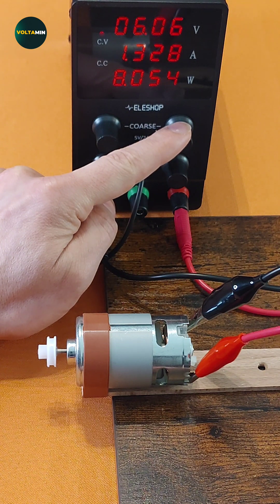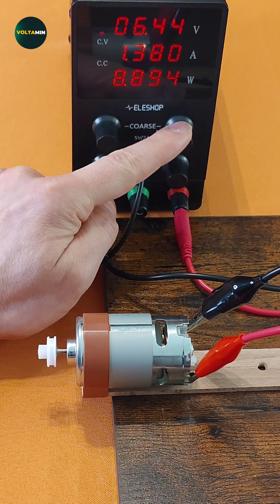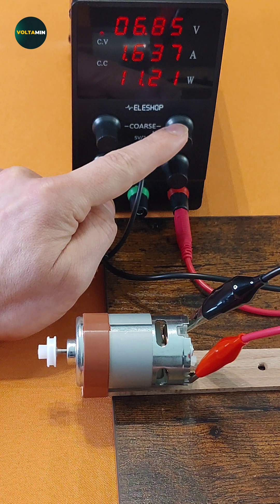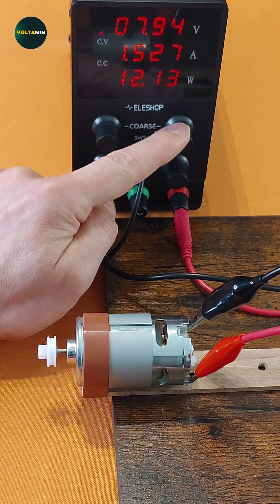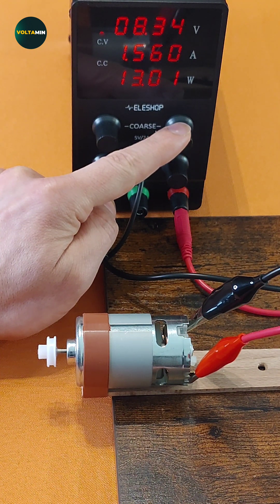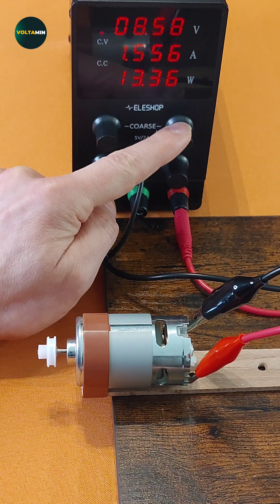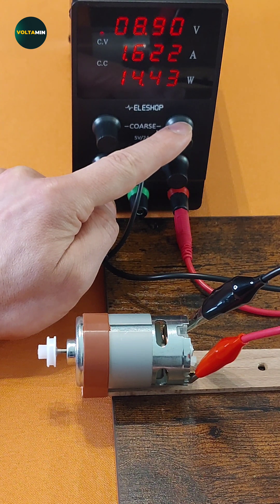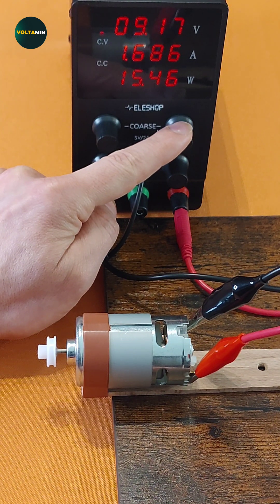Regarding current, as we increase the voltage, the motor's speed increases, leading to a higher back electromotive force, back EMF. The back EMF opposes the applied voltage, and to maintain the increased speed, the motor draws more current. This results in higher power consumption.